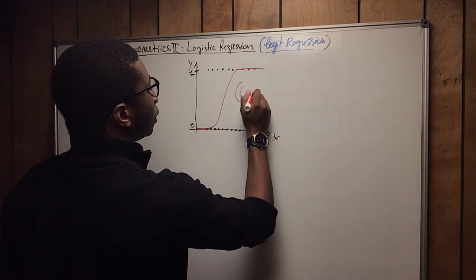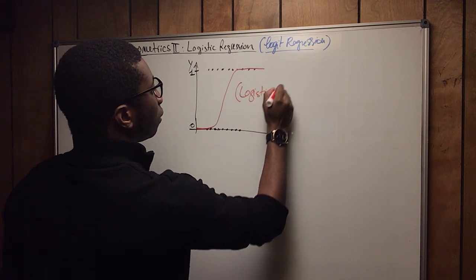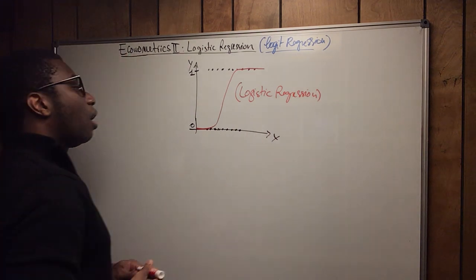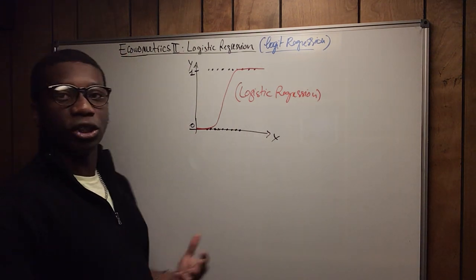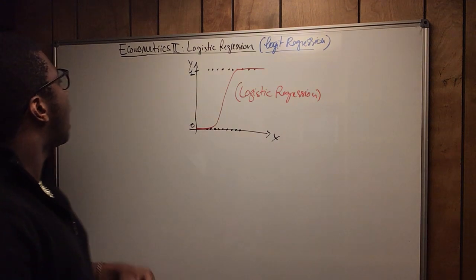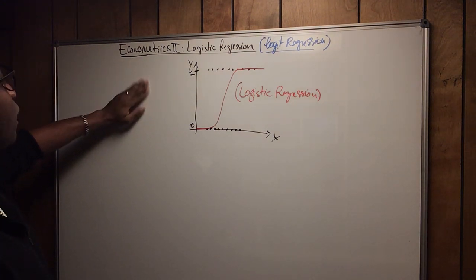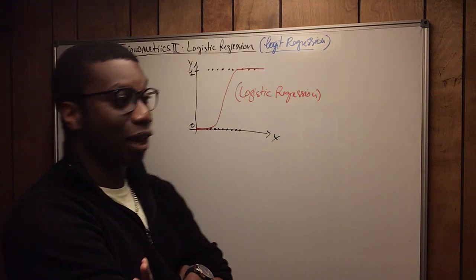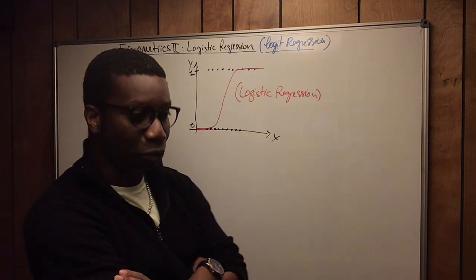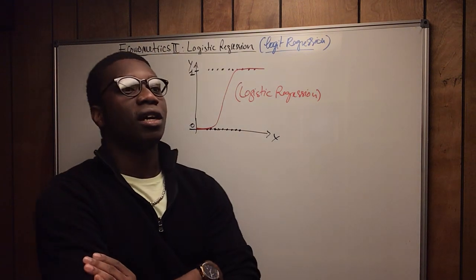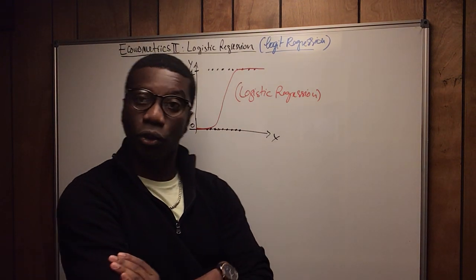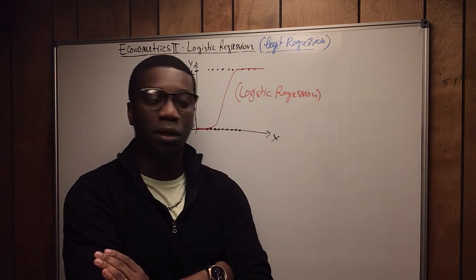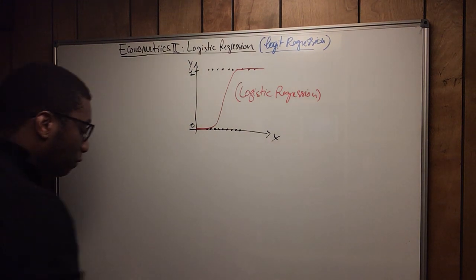And this is what the logistic regression looks like — that S-shaped curve. Now I'm going to give you a very practical example. Let's say you're trying to buy a house. People may not know this, but that's what real estate companies do. When you're trying to buy a house, the first thing they check is your credit score — they want to make sure you can afford your mortgage on a long-term basis, usually 30 years.